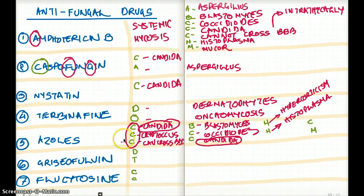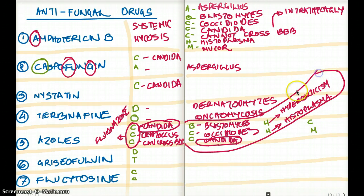Now remember that these three Cs are for fluconazole. Fluconazole - that's the one that can cross blood-brain barrier. These five are for ketoconazole. And that's why we are again using candida here.